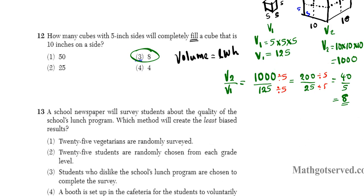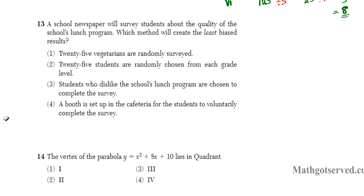Alright, let's take a look at question 13. It says a school newspaper will survey students about the quality of the school's lunch program. Which method will create the least biased results? If you think about what bias means, bias means that you're leaning in a certain direction. Either you like or dislike the school's food. So we want to create least biased. We do not want to focus our sample space on people that are leaning in a certain direction.